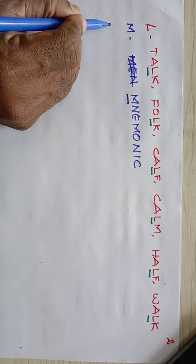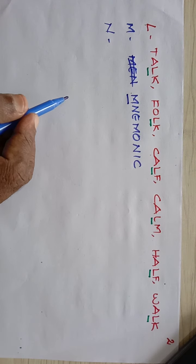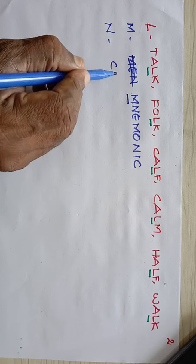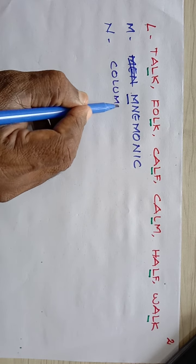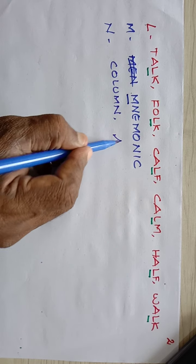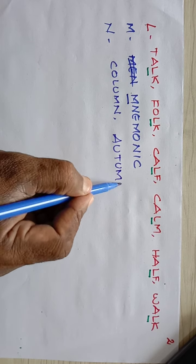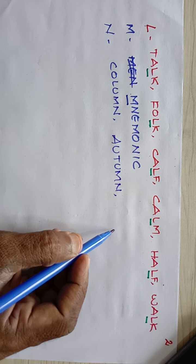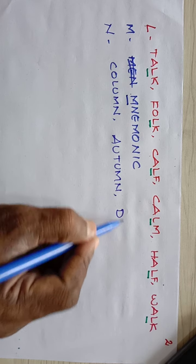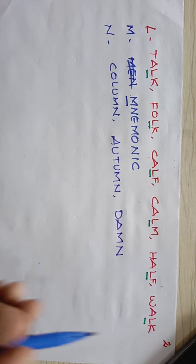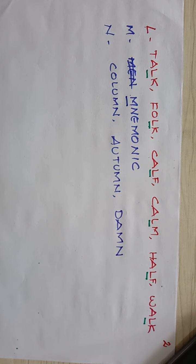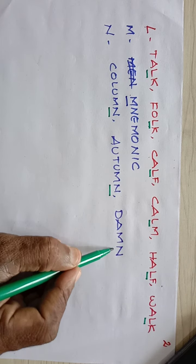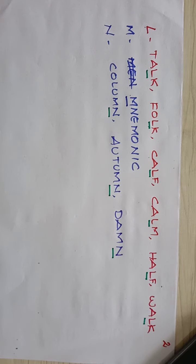N is silent in some words: column, atom, damn. In these words, this particular N is silent. That's the reason we call it 'damn' — the N is not pronounced.